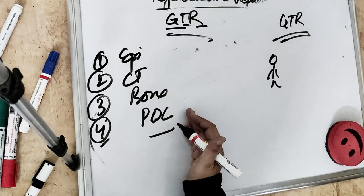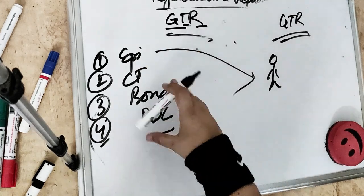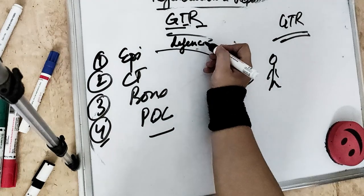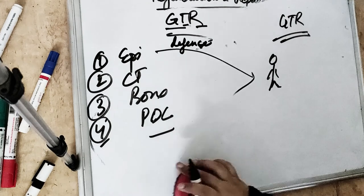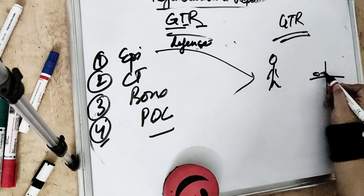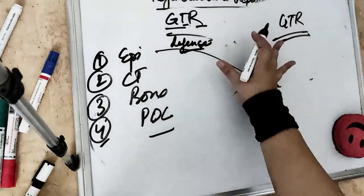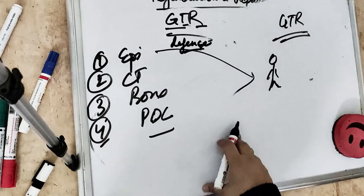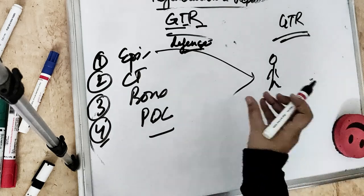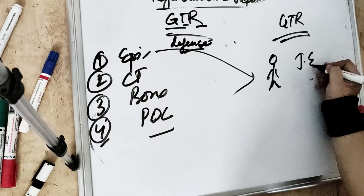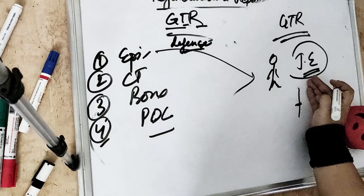To understand GTR better, consider this story: a girl takes a seat in dental college, and there are four guys - first guy is the epithelium, second is the connective tissue, third is the bone, and fourth is the periodontal ligament. All four guys want to propose this girl. The epithelium comes first - his main work is defense, he is like a strong fighter. But if this girl says yes, they become a long junctional epithelium - not a normal junctional epithelium - and the girl's future is ruined.